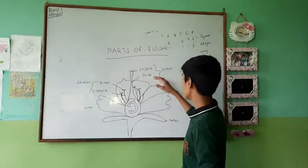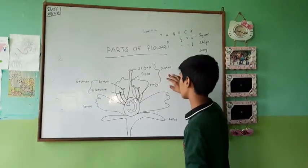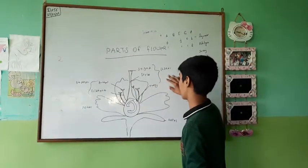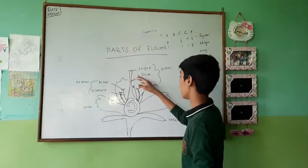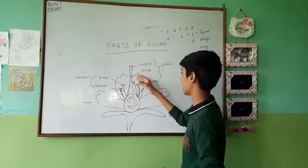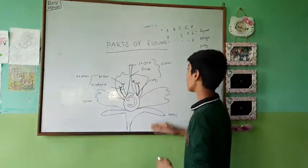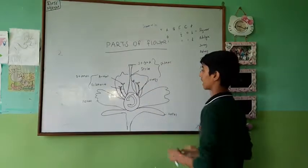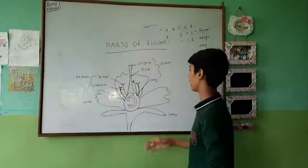Pistil. It is mainly a protective part. Stigma — it is sticky, and it contains pollen grains.